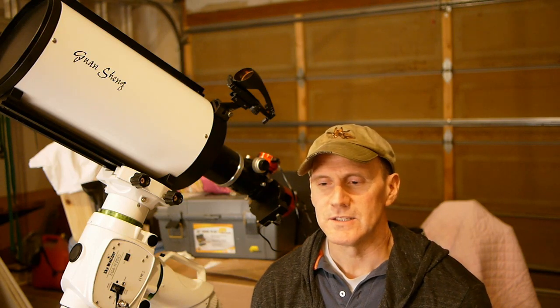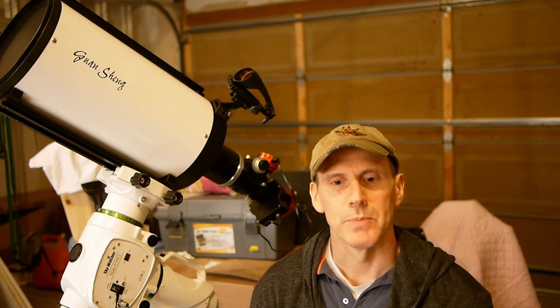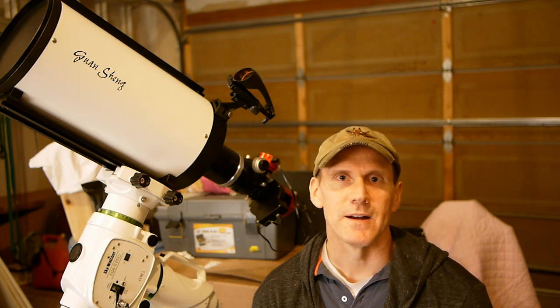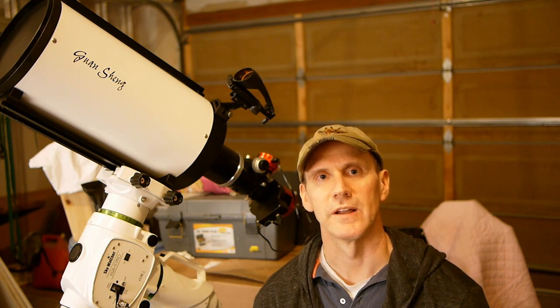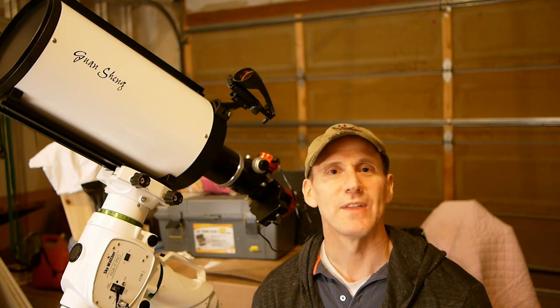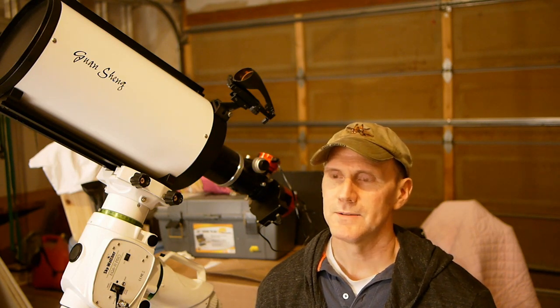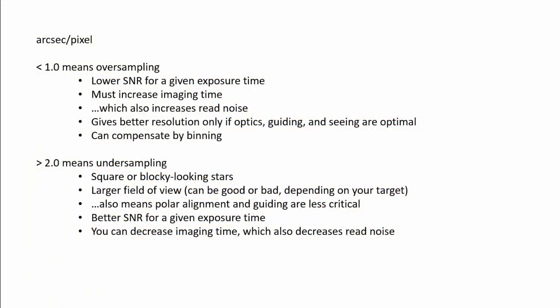Most of the time you're not getting any more detail — you just have more pixels for the same object, so it's not giving you any more detail. Now, undersampling is if this ratio — pixel size divided by focal length multiplied by 206.3 — is more than two arc seconds per pixel. Then they call that undersampling, and that just means you're not going to see very good detail. Severe undersampling can result in blocky-looking stars.